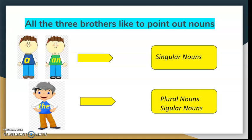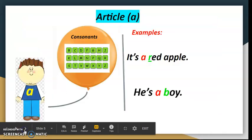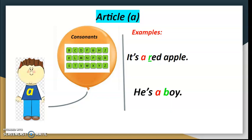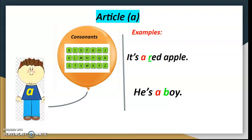Though A and An are twins, they like to hang out with different friends. Article A likes to hang out with nouns that begin with consonants. For example: it's a red apple, he's a boy. Both 'red' and 'boy' begin with consonant letters.